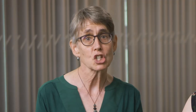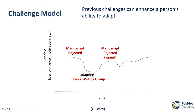Another model, the challenge model described by O'Leary, addresses the adaptation phase of resilience. This model states that a challenge, provided it is not too extreme, can enhance a person's adaptation and prepare them better to face the next challenge.